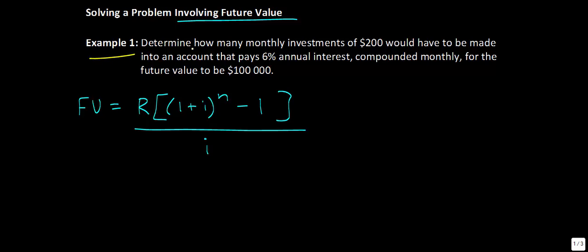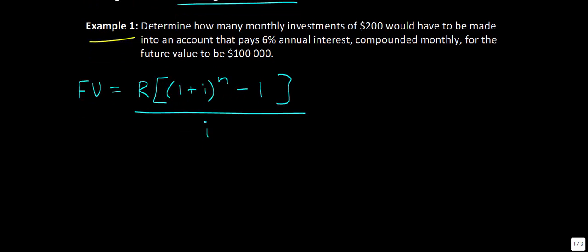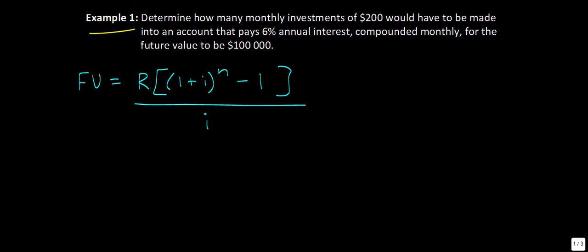Example one says: determine how many monthly investments — that's going to be n — of $200 would have to be made into an account that pays 6% annual interest, compounded monthly, for the future value to be $100,000. I'm going to start by substituting in this information.